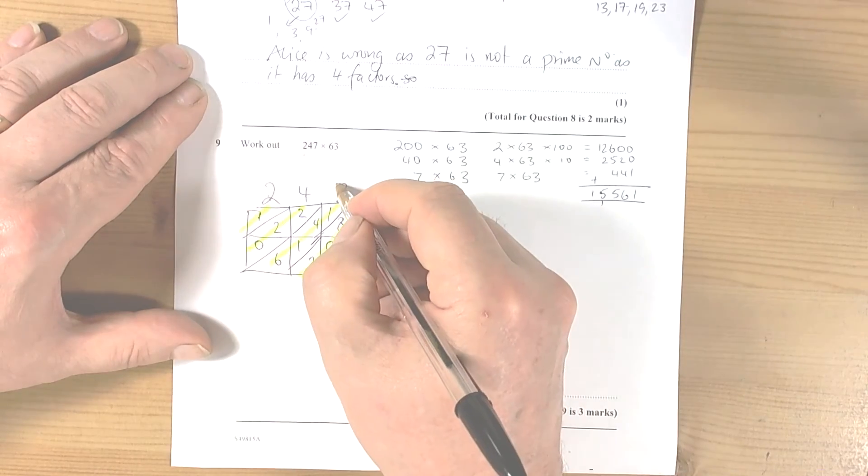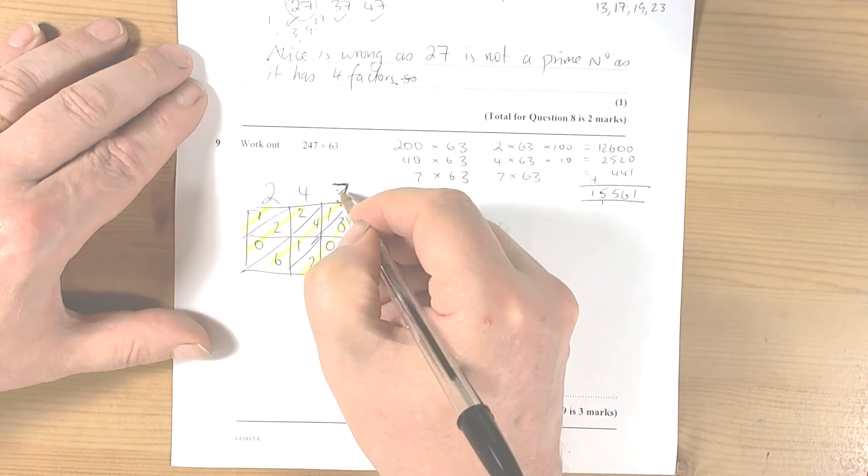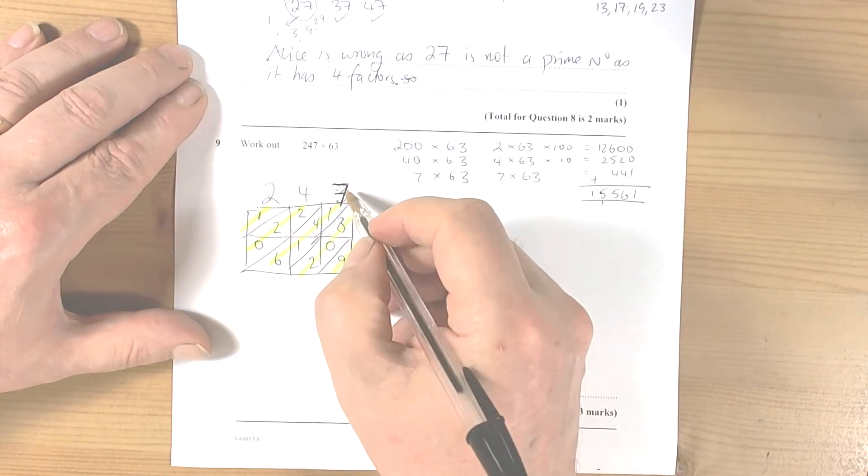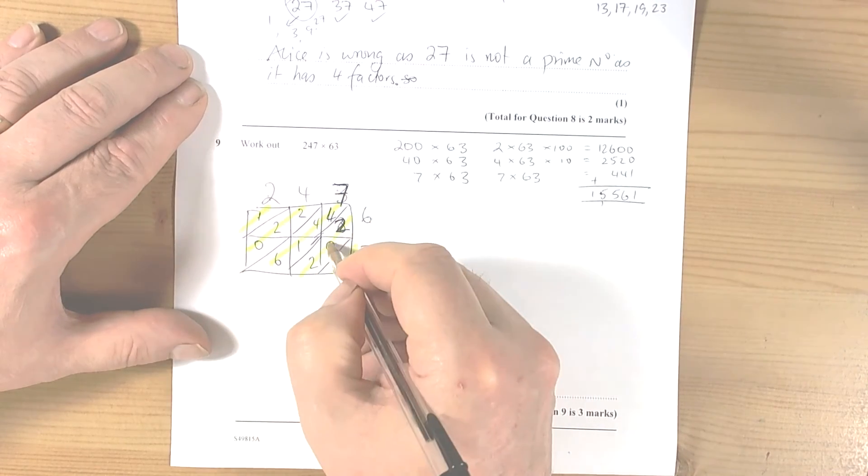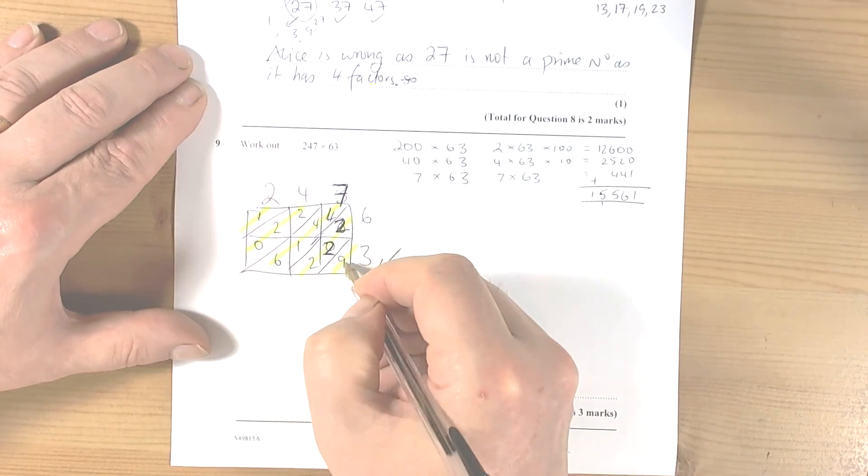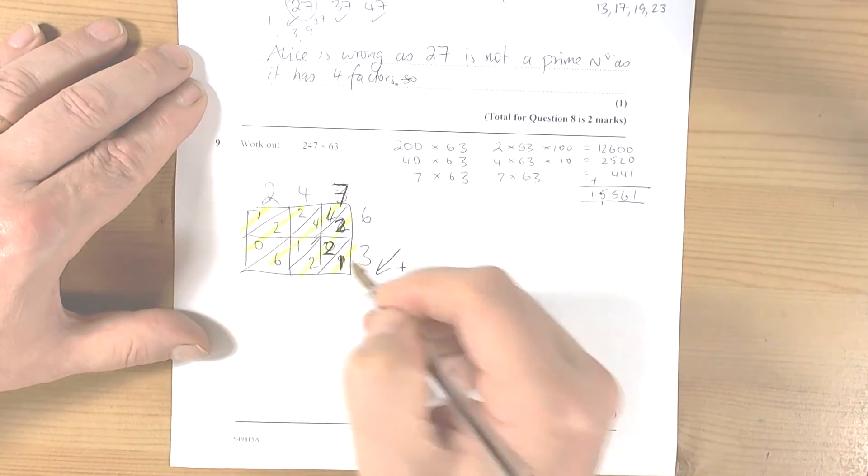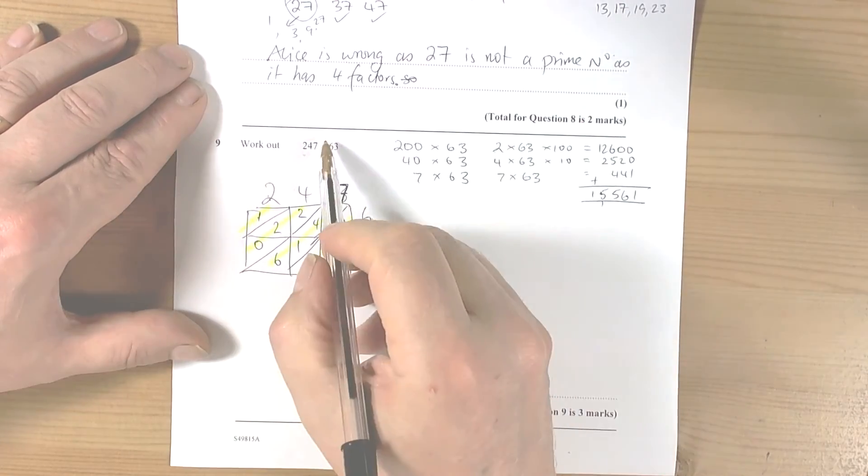It would help if I do the right calculation, of course. This was 247. So 7 times 6 is 42, and 7 times 3 is 21.